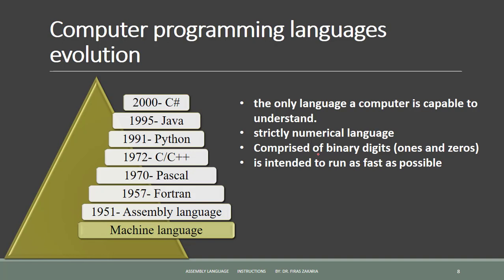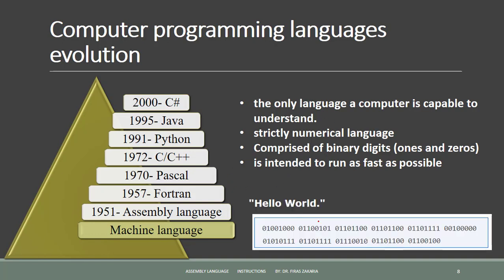Machine language is normally displayed in hexadecimal form so that it is a little bit easier to read. Here is an example of machine language for the text 'Hello World'. Machine language is a numerical language comprising binary digits.